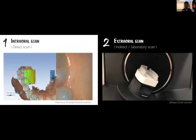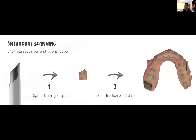Today we'll focus on intraoral scanning. The way an intraoral scanner works is simple: at the tip of the scanner, it continuously takes small three-dimensional pictures — that's step one, three-dimensional image capture. The tip is very small, so you can't capture the whole mouth at once. Those small pictures are sent to the computer, which takes about 10 to 25 pictures per second, then puts those pictures together to create a full-arch scan. That's step two: reconstruction of three-dimensional data.